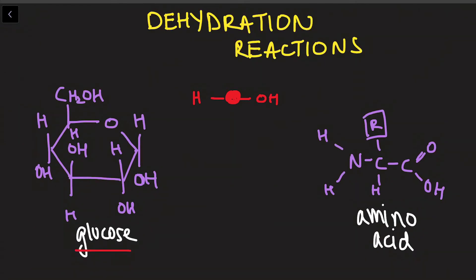Glucose is a monomer. Notice how it has a hydrogen on one side and a hydroxyl on the other. Amino acids are monomers of proteins. Again, it has a hydrogen atom on one side and a hydroxyl group on the other.